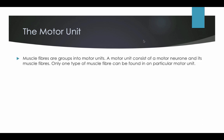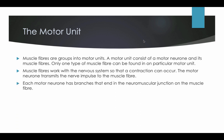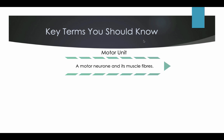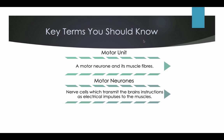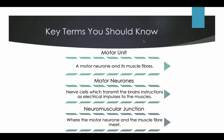The motor unit. Muscle fibres are grouped into motor units. A motor unit consists of a motor neuron and its muscle fibres. Only one type of muscle fibre can be found in a particular motor unit. Muscle fibres work with the nervous system so that contraction can occur. The motor neuron transmits the nerve impulse to the muscle fibres. Each motor neuron has branches that end in a neuromuscular junction on the muscle fibres. Key terms: motor unit — a motor neuron and its muscle fibres; motor neurons — nerve cells which transmit instructions from the brain as electrical impulses to the muscles; neuromuscular junction — where the motor neuron and the muscle fibres meet.